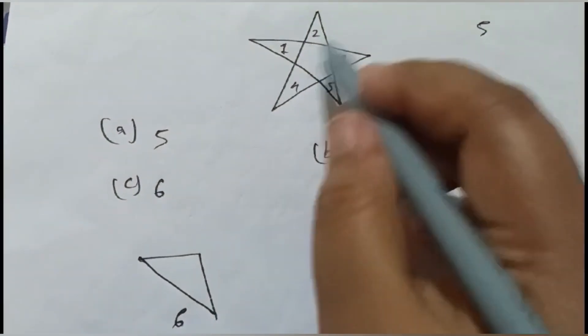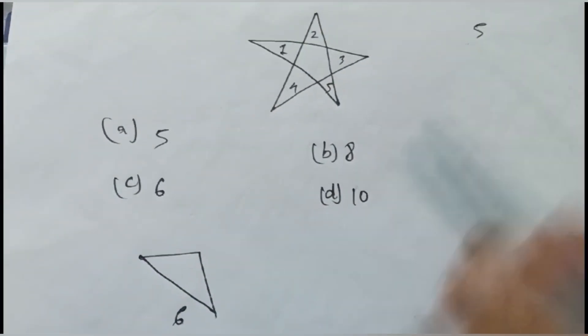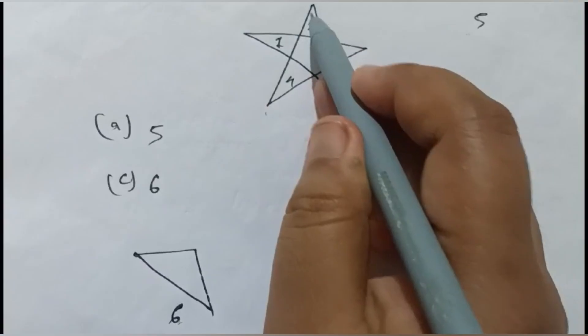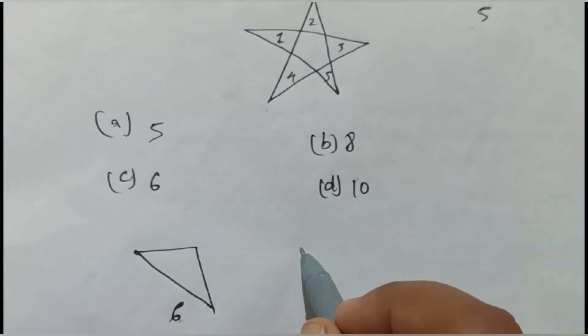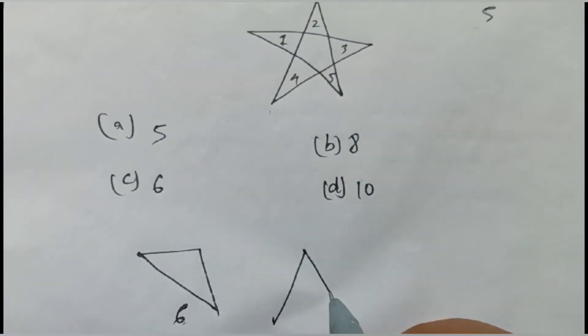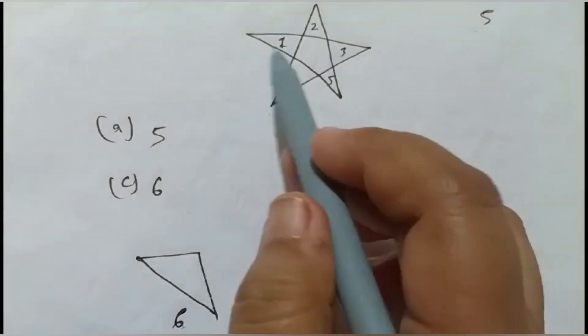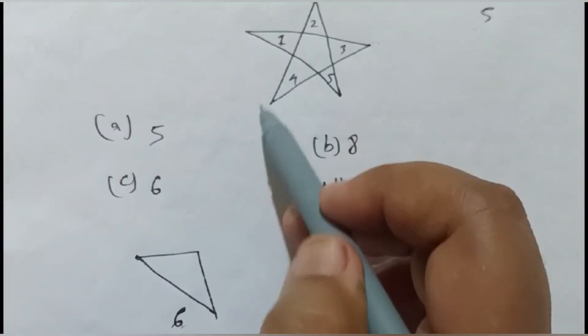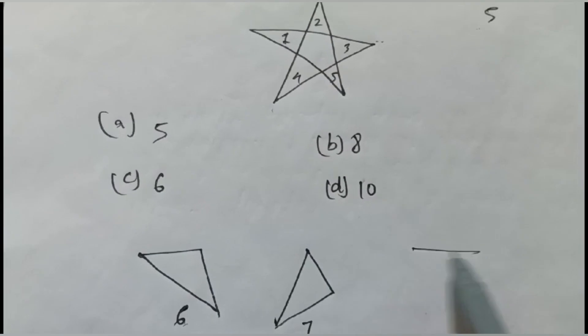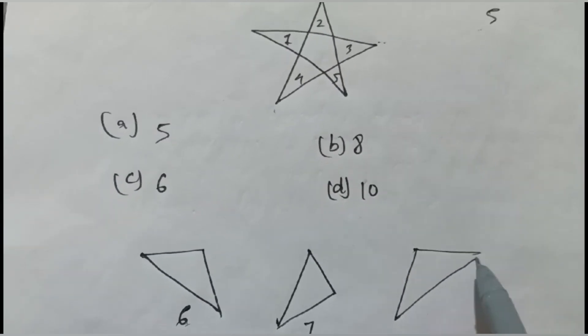This is number six. The small one is number five, I have written here. Number six and seven is this one here, like this. And eight is this one here, so this is eight.